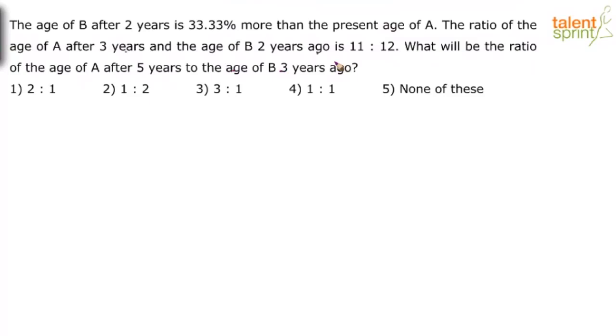So basically the question on ages, he is talking about 2 persons B and A. The first statement says the age of B after 2 years is 33.33% more than the present age of A.